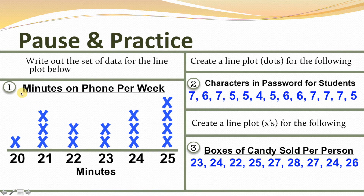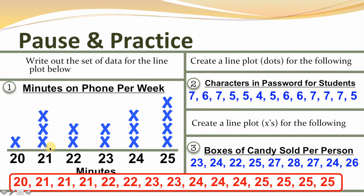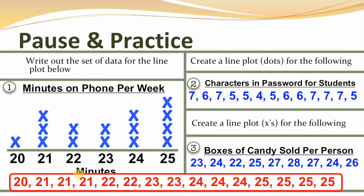Let's take a look at our answers. For number one, we had to look at our line plot and determine what the data set would look like. One x on 20 means one 20; three x's on 21 means three 21s; two x's on 22 means two 22s; two x's on 23 means two 23s; three x's on 24 means three 24s; and four x's on 25 means four 25s. Each of these numbers represents the number of minutes spent on the phone per week.